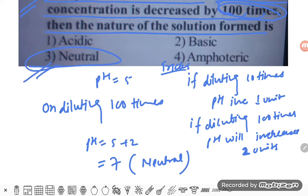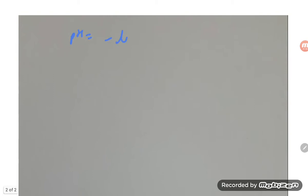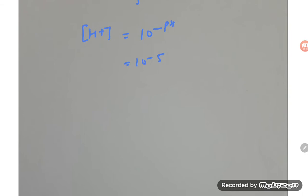This is the first method. Now let us go with another method. They say pH equals minus log of hydrogen ion concentration, and that is given as five. So the H⁺ ion concentration is 10 to the power of minus pH, which is 10 to the power of minus five.